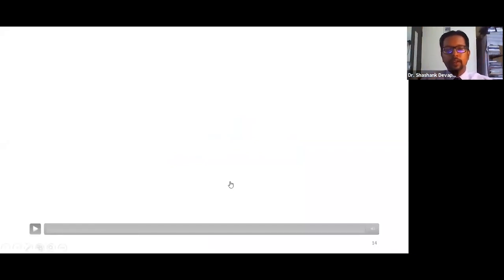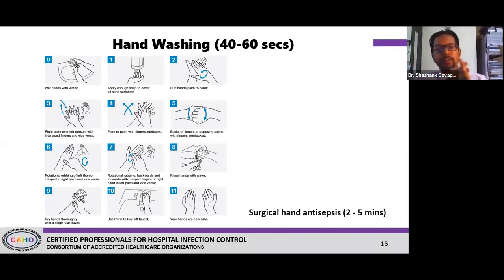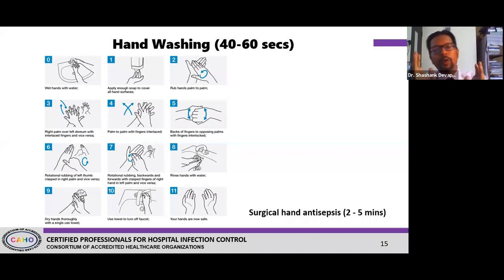Now for hand washing — the reason you see 40 to 60 seconds is because this is the total time from the beginning to the end of the procedure, as there are a few additional steps. But the six basic steps — steps 2 through 7 — are the same as in hand rub, accounting for about 20 to 30 seconds. Alcohol-based hand rubs are a faster method versus hand washing, but each has its own merits and demerits.